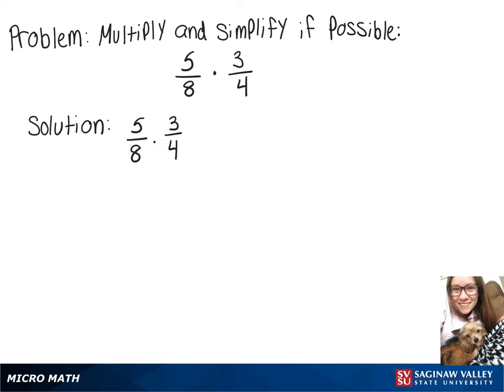We're going to multiply 5 over 8 times 3 over 4. We're going to multiply our numbers across the top, so on top we'll have 5 times 3, and we'll multiply our numbers on the bottom, so on the bottom we'll have 8 times 4.